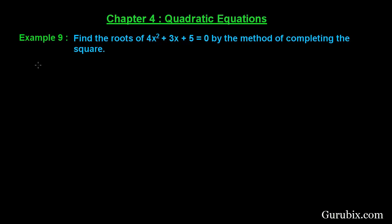So let us see how to find the roots of this quadratic equation by using completing square method. First of all we shall collect the given quadratic equation that is 4x square plus 3x plus 5 is equals to 0.